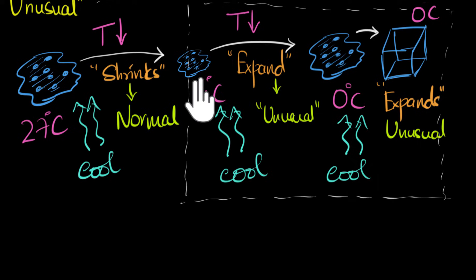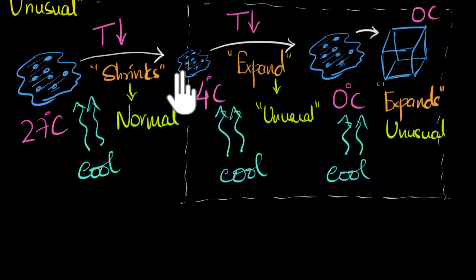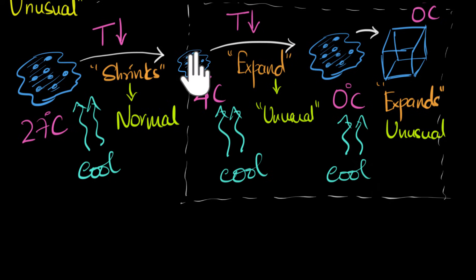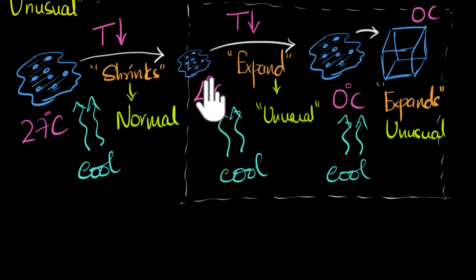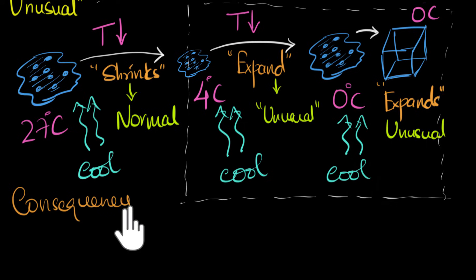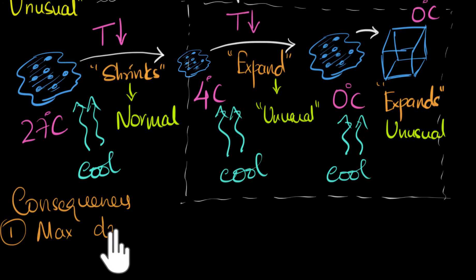The first consequence: imagine you have water right at four degrees Celsius. If you cool it down, it expands. If you heat it up, it also expands — normal behavior. So either ways, water expands from four degrees Celsius. That means the molecules are closest at four degrees Celsius — the molecules of water are most crowded at four degrees Celsius. In physics, the density of water is maximum at four degrees Celsius.